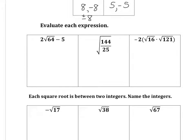So 2 times the square root of 64 minus 5. We're going to do the square root of 64 first, which is 8. I'm going to put that in parentheses because the 2 is multiplied by whatever's in there. 2 times 8, 16. 16 minus 5 is 11.